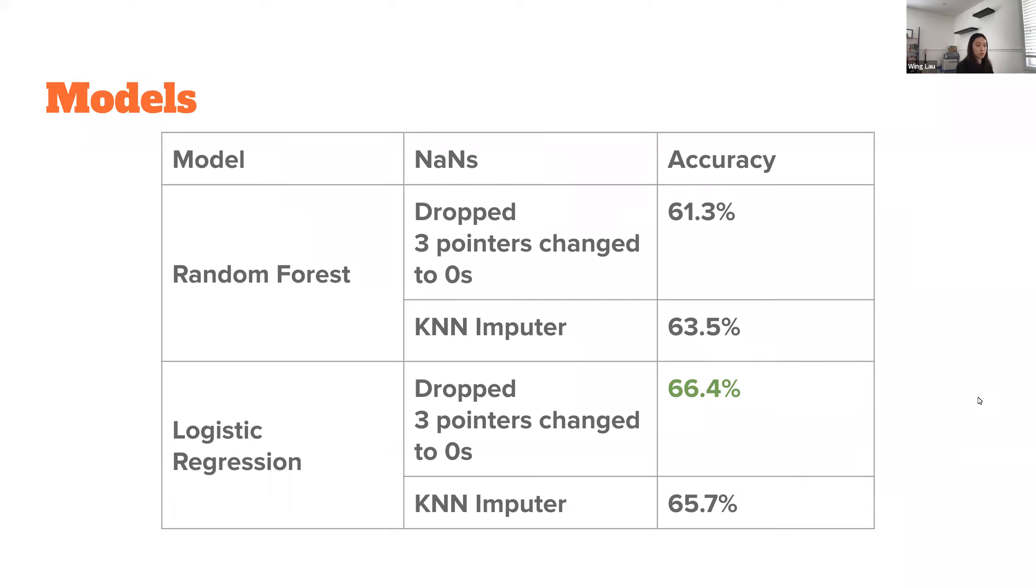This is a summary of the best models that I've gotten. Logistic regression having dropped all NANs and three-point changed to zeros did the best. But in terms of having dropped NANs, that was a significant amount.